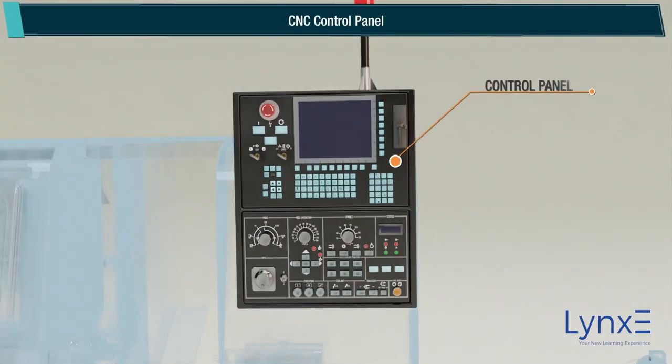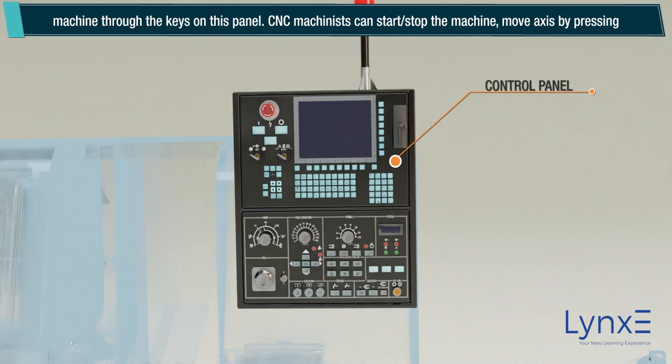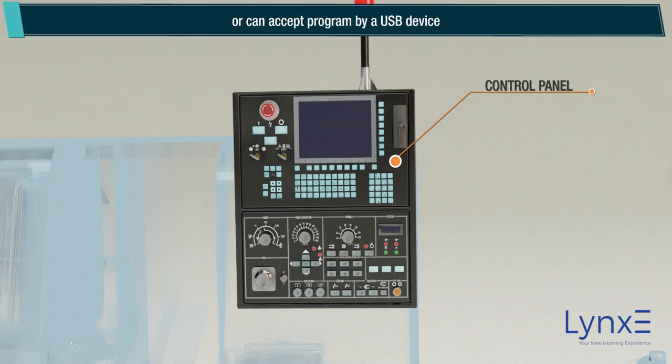CNC control panel: this is the brain of the CNC machine. All the CNC programs are stored inside this panel. CNC machinists control the whole machine through the keys on this panel — they can start or stop the machine, and move axes by pressing different keys. The CNC can either be programmed by a computer attached to it, or can accept a program via a USB device.